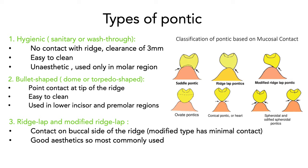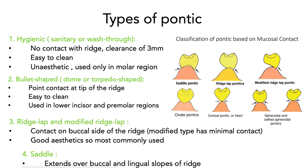The most commonly used design is called the ridge lap or the modified ridge lap pontic. These are much more aesthetic. The difference is that the modified ridge lap is easier to clean but gets more food impaction under the pontic, while the ridge lap is harder to clean but gets less food impaction on the palatal or lingual side. The last design is called the saddle pontic, which covers more of the periodontal tissues and is generally more difficult to clean, requiring super floss. Dr. Gardia says he would generally prefer to use a spheroidal design.